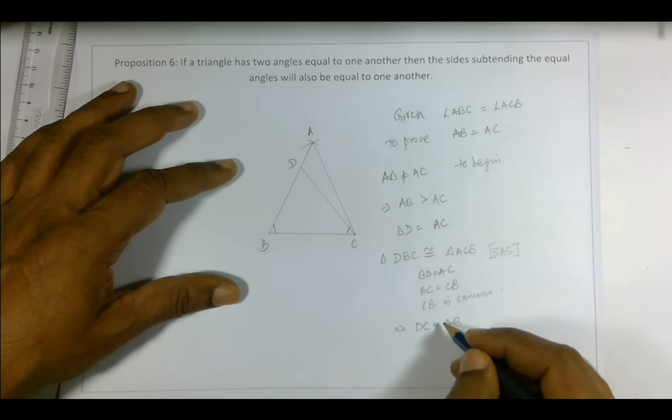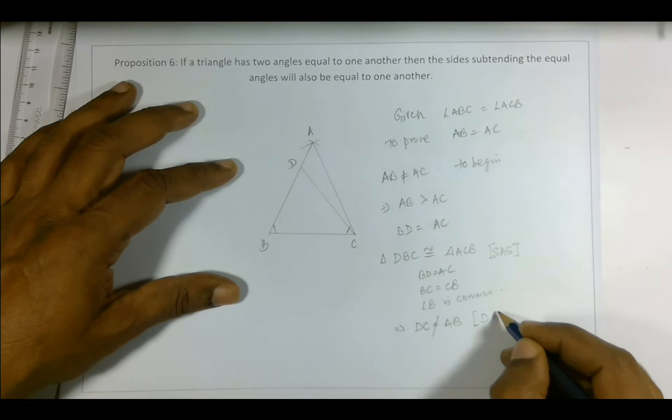Why? Because D was taken from somewhere in between AB. So this can't be equal because D is somewhere between A and B.